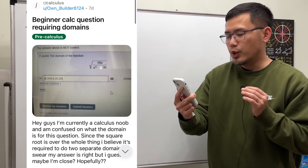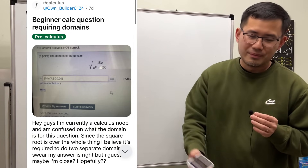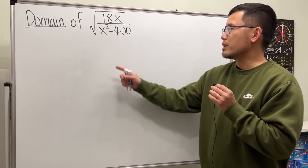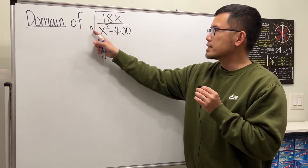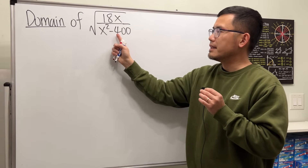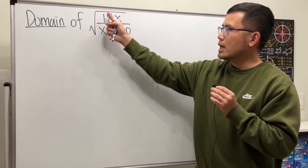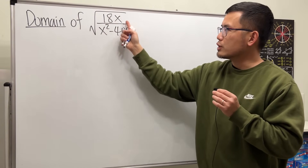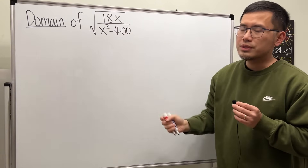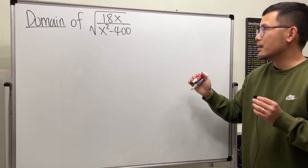This is a beginning calculus question requiring us to find the domain for the function: square root of 18x over x squared minus 400. Notice we have a rational function inside the square root, and these are the conditions that we have to set up.